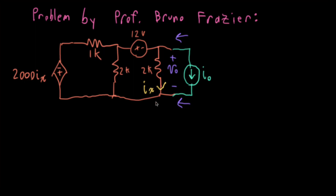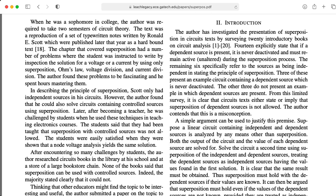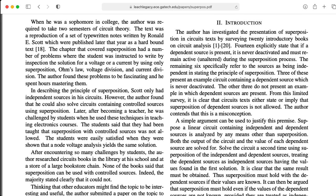To solve this problem, I need to solve for the controlling variable IX. I'm going to solve this using Marshall Leach's superposition method. In turn, I'm going to turn on each of the sources while deactivating the other two. Quite importantly, I am going to go ahead and deactivate the controlled source while looking at the independent sources, which the textbooks tell you you can't do — but Marshall told me that I could do this.